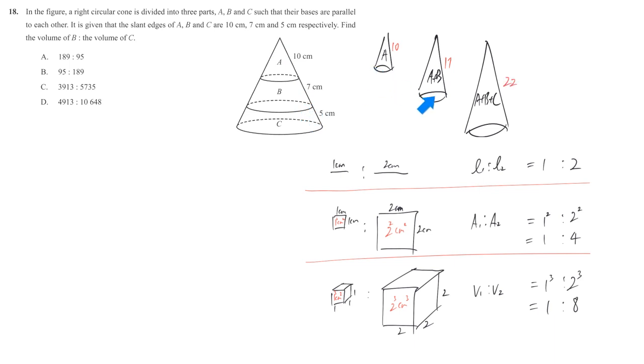If I call this the first one, second one, third one, we have L1 to L2 to L3 equals 10 to 17 to 22. What we're interested in is the volume, so we may skip this part and just directly go to the volume. We know that they are not the same, but related, which is cubed.